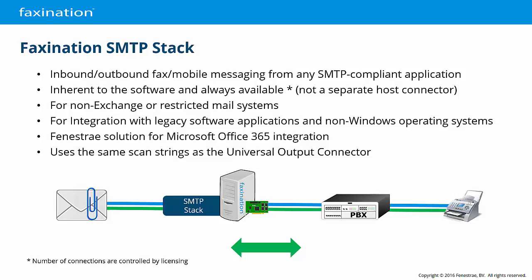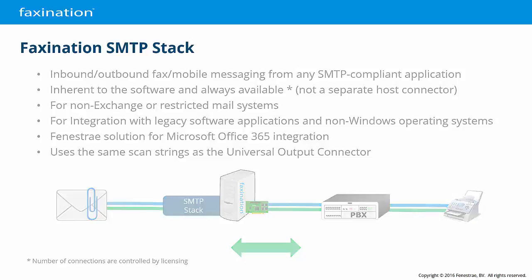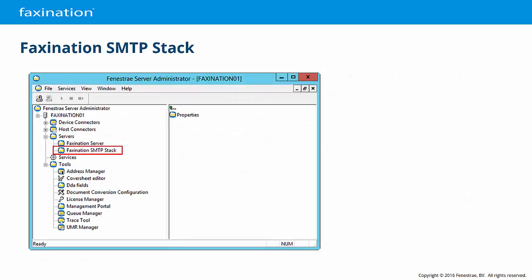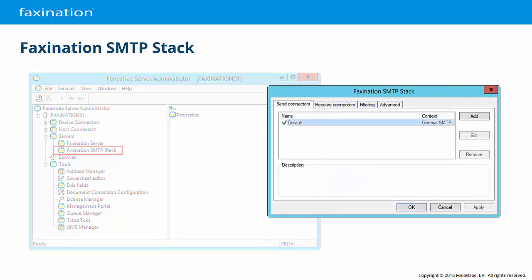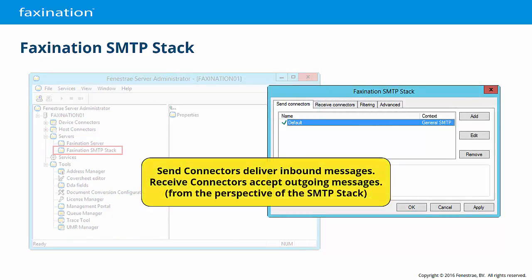It uses the same scan strings as the Faxonation Universal Output connector, but for this connector the scan strings are optional. The number of unique SMTP send and receive connections that you may configure is controlled by licensing. In the Faxonation Server Administrator, under Servers, you'll find the Faxonation SMTP stack. The configuration is primarily within the send and receive connectors. The words send and receive are from the perspective of the Faxonation server, so a send connector delivers inbound messages to users, and a receive connector accepts outgoing messages from users.